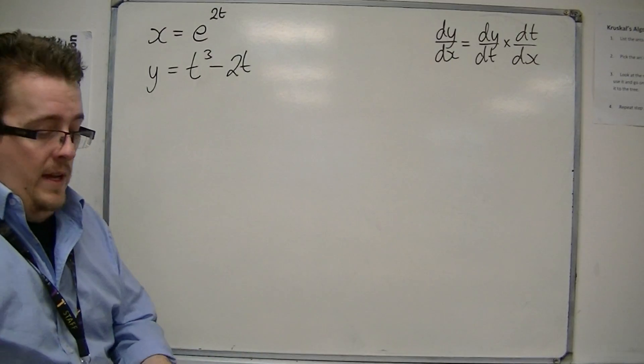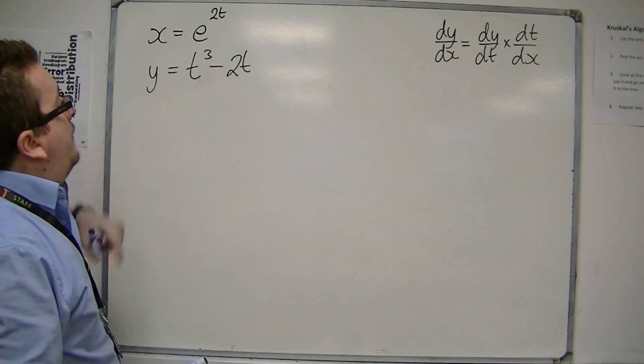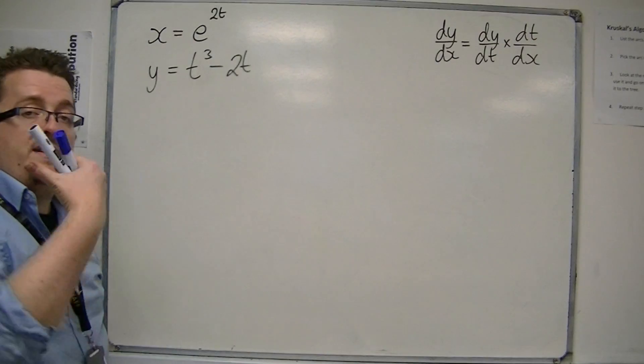So first of all, if my x is e to the 2t, and y is equal to t cubed, sorry, take away 2t,